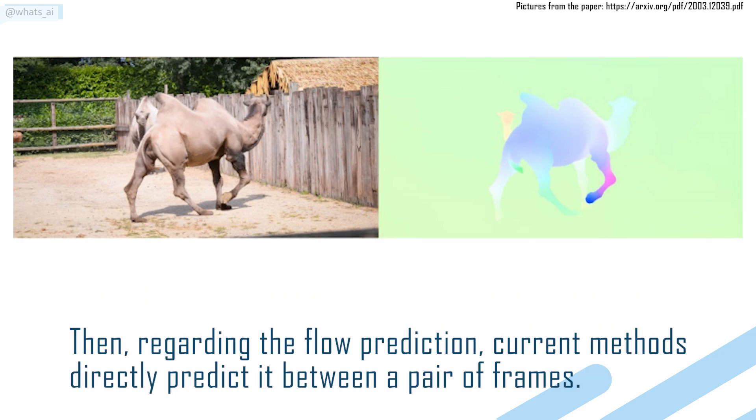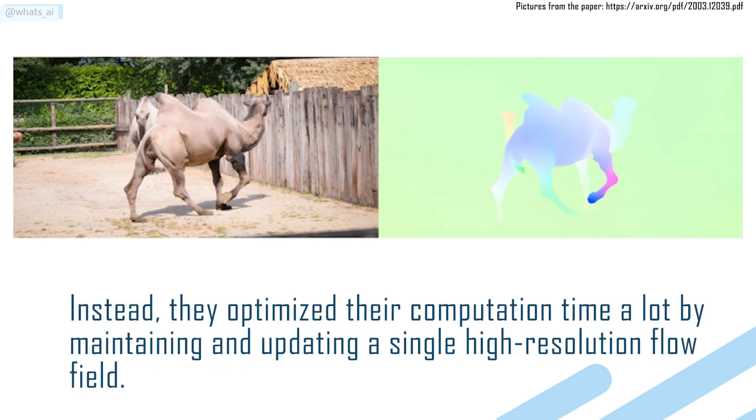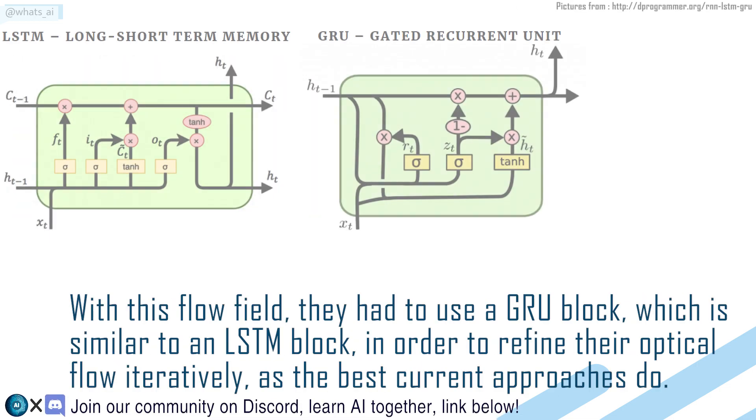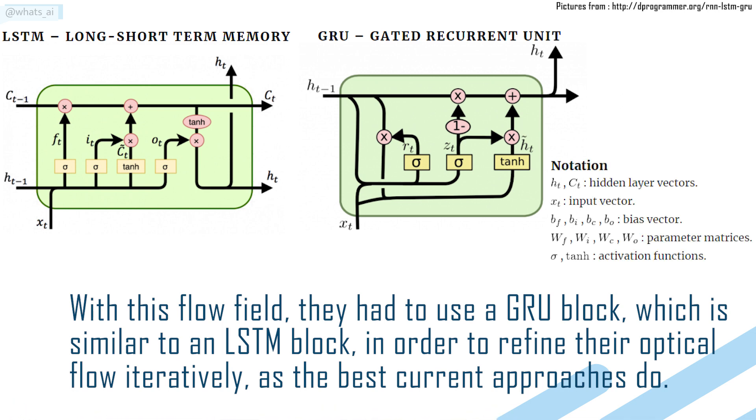Then, regarding the flow prediction, current methods directly predict it between a pair of frames. Instead, they optimize their computation time a lot by maintaining and updating a single high-resolution flow field. With this flow field, they had to use a GRU block, which is similar to an LSTM block, in order to refine their optical flow iteratively, as the best current approaches do.